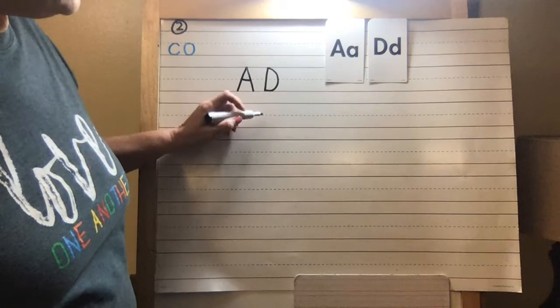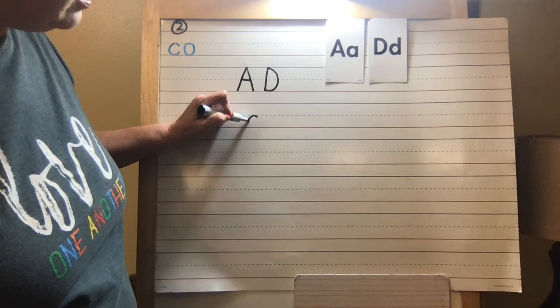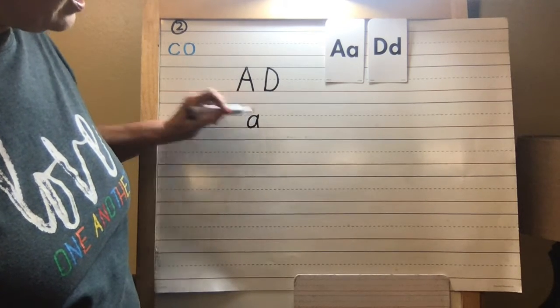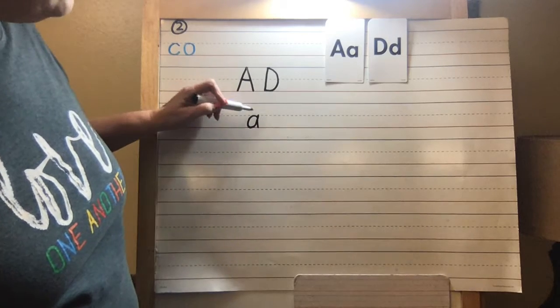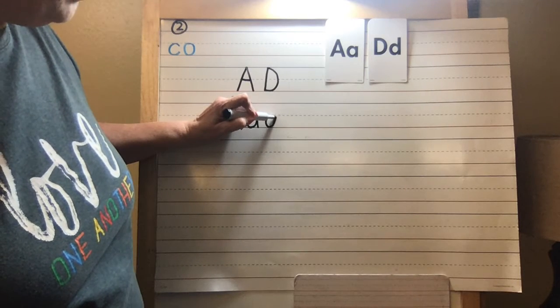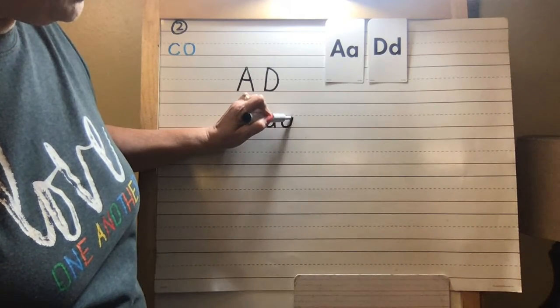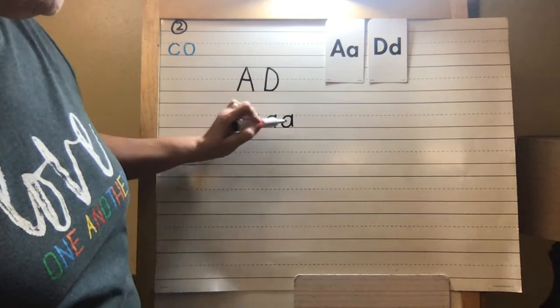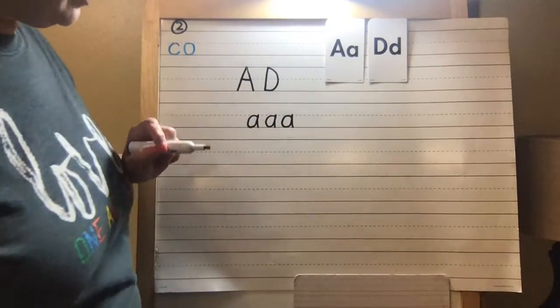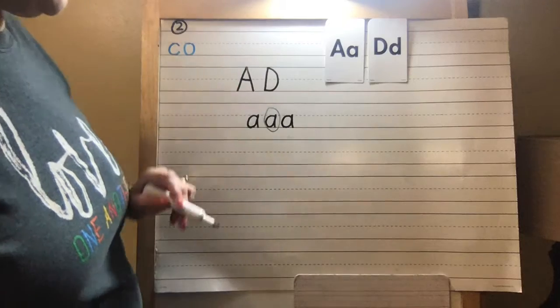Okay, so we're going to start with the A. So the lowercase a, we're going to start with a magic C, up like a helicopter, bump, and bump back down. Notice that you don't do anything up here. So magic C, bump, bump back down. And you're going to do it all the way across. You can do even more than that. And then let me see which one is my best one. I think it would be that one.